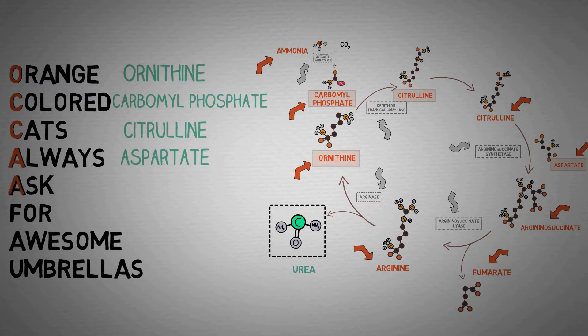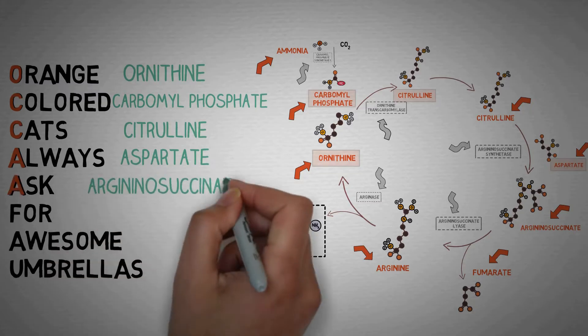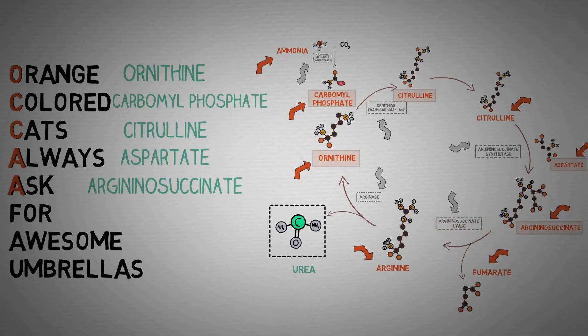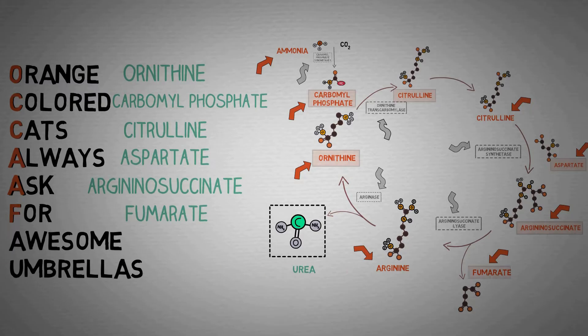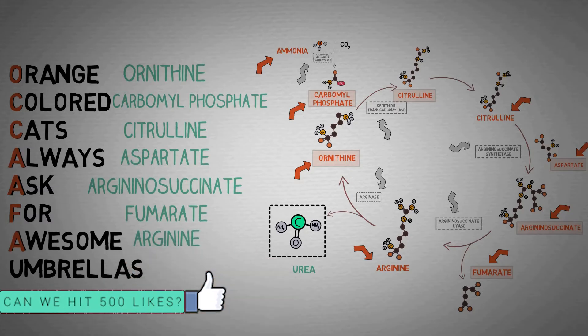The A in ask stands for argininosuccinate, which is this molecule here formed by the combination of aspartate with citrulline. The F in for stands for fumarate, which is this molecule right here formed by the cleavage of argininosuccinate. The A in awesome stands for arginine, which is the next molecule in the urea cycle.